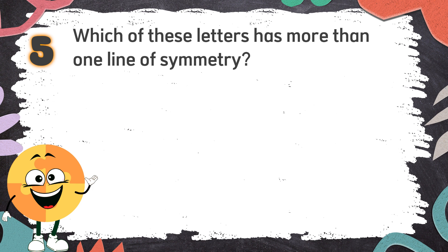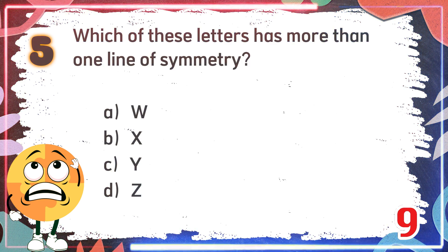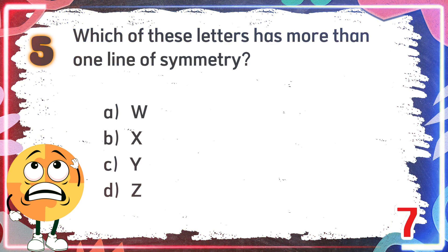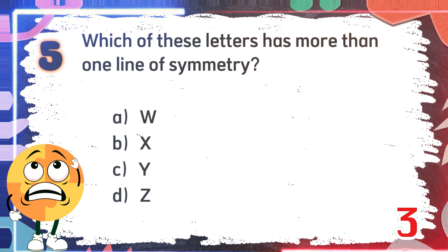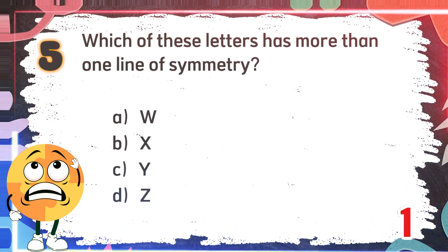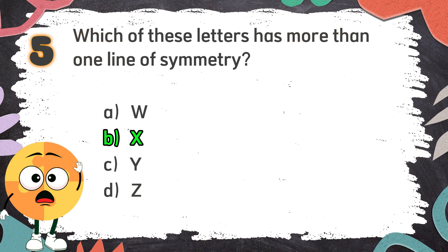The correct answer is C. Two semicircles. Number 5: Which of these letters has more than one line of symmetry? The choices are A. W, B. X, C. Y, D. Z. The correct answer is B. X.